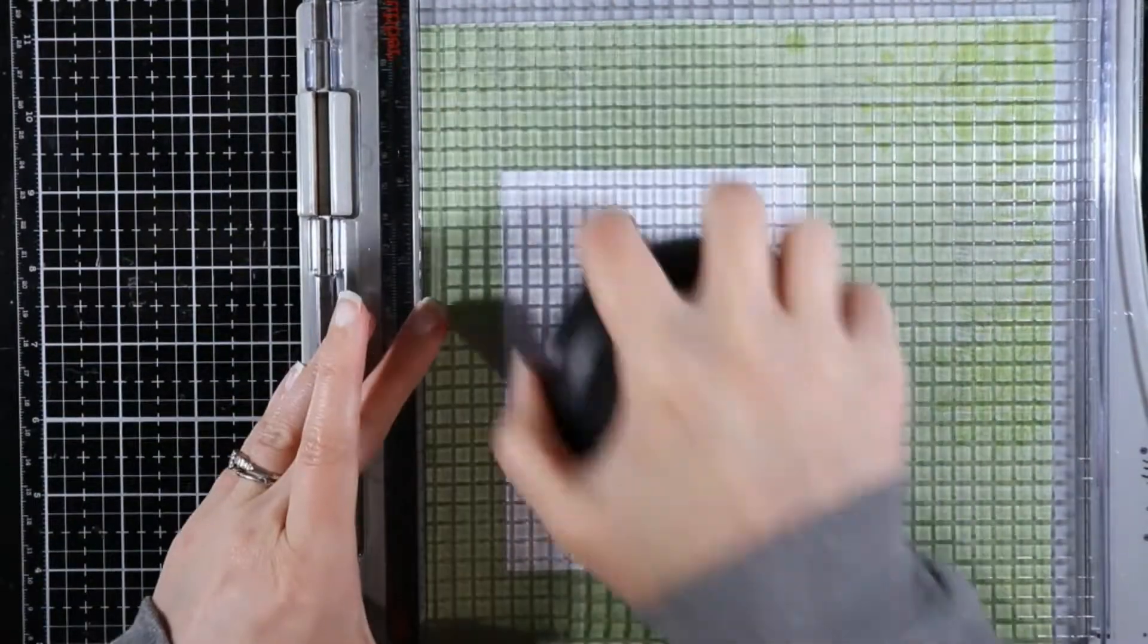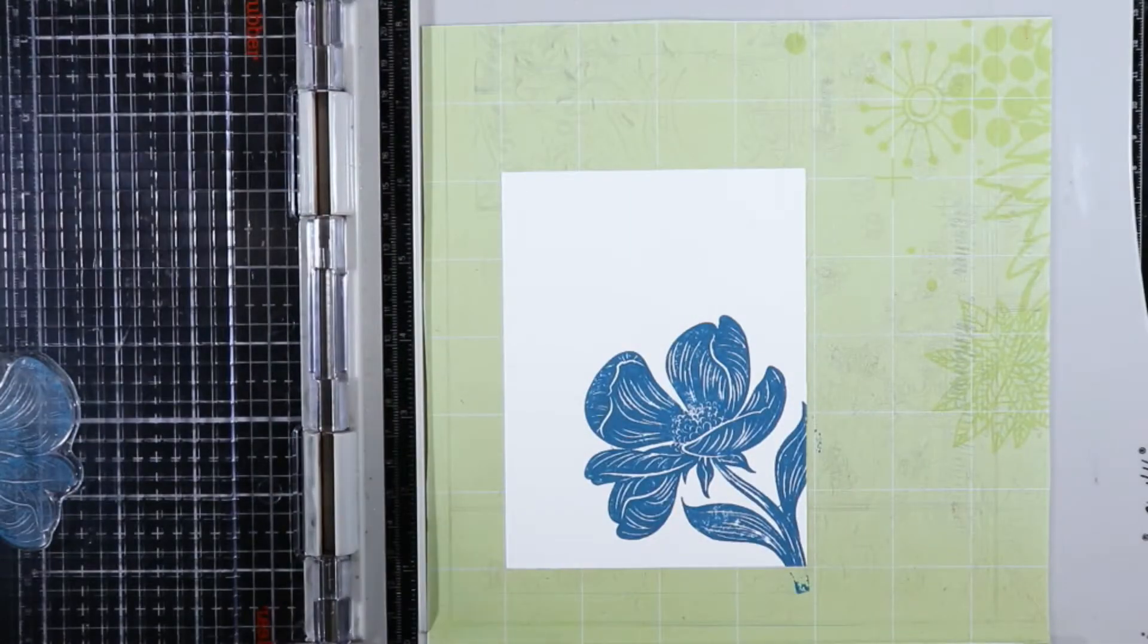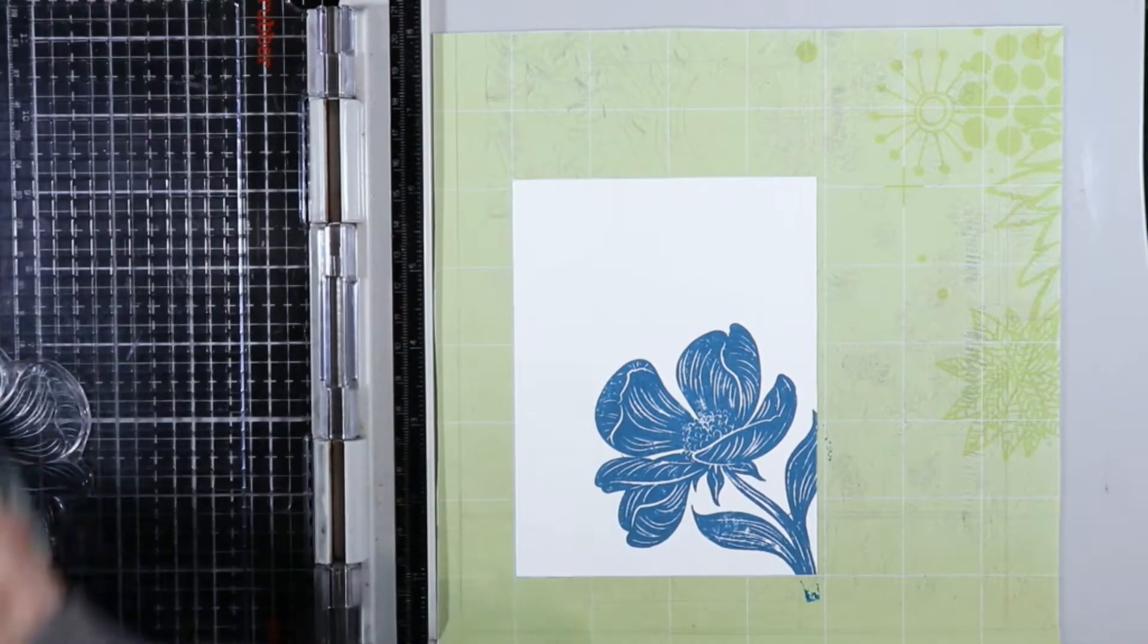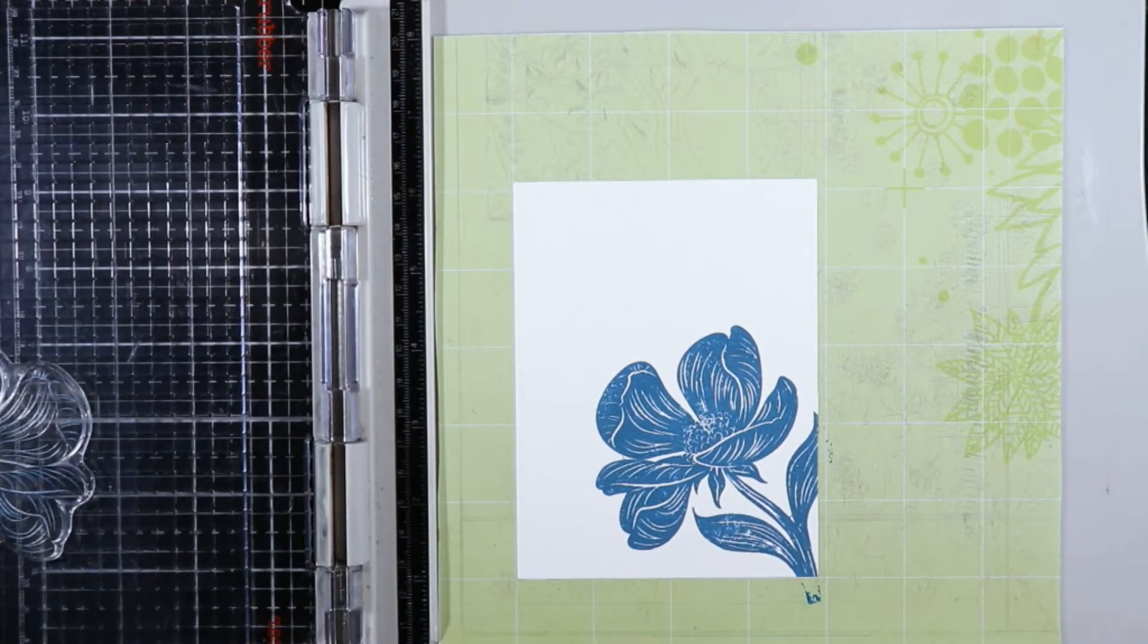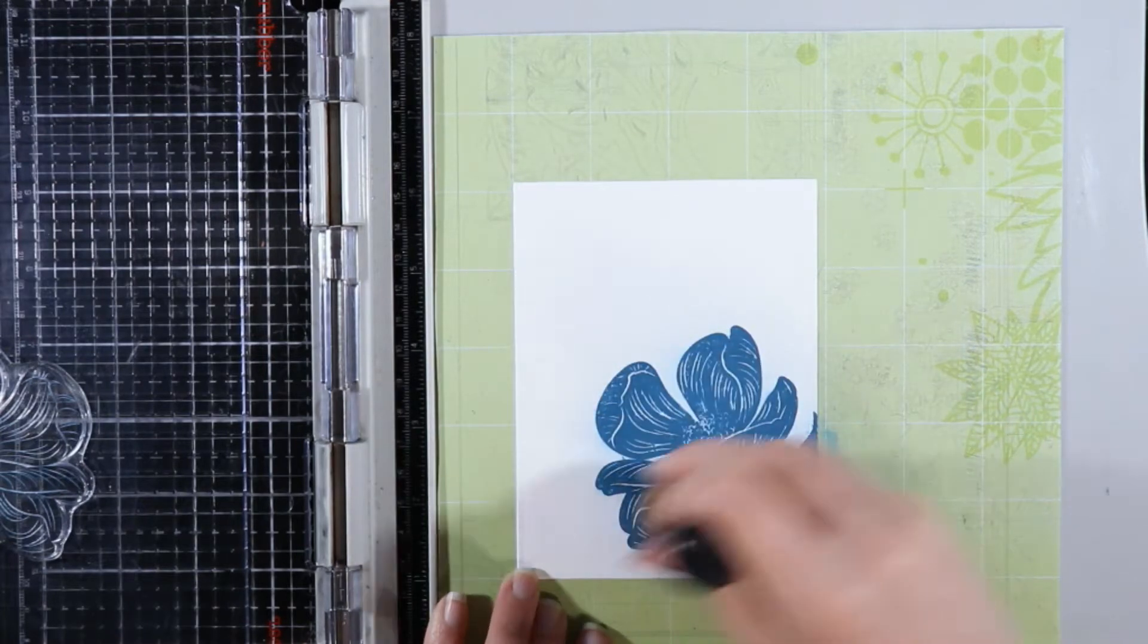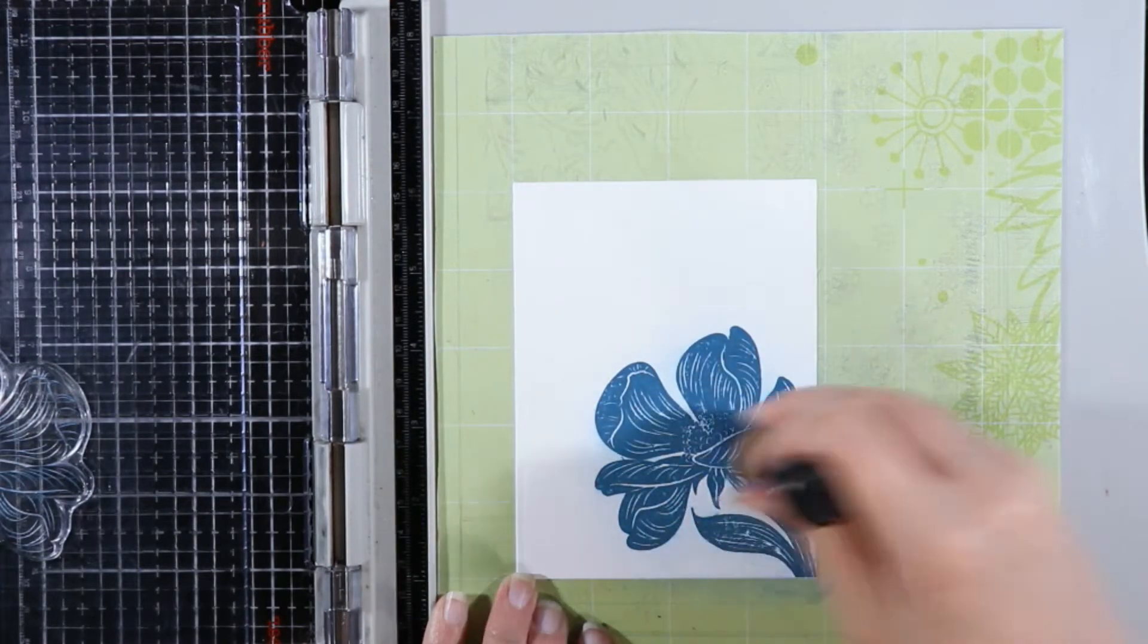Now I'm going to have to stamp this twice because I did not get a very good impression the first time. So after I get a good impression, then you're going to take a clean blending foam or some kind of sponge or something that is clean and smear your stamp. Now, as you notice, I cleaned my stamp off over there on the side first.